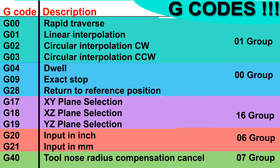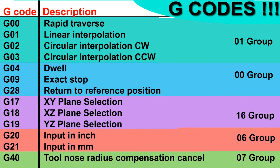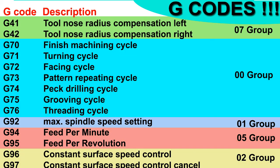You can see the list of G-codes — whether modal or non-modal, which group they belong to, and their basic functions. G00 for rapid travel, G01 for linear interpolation, G02 and G03 for clockwise and counterclockwise circular interpolation. G20 and G21 for inch or metric system, G41 and G42 for tool nose radius compensation, G90 and G91 for absolute or incremental programming, G17, G18, G19 for plane selection. There are also canned cycles like G71 for rough turning, G72 for facing, G75 for grooving, and G76 for threading.